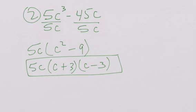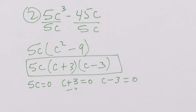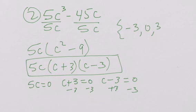If I'm going to solve, I'm going to have 5C equal to 0, C plus 3 equal to 0, and C minus 3 equal to 0. Zero pair out the 3s. So my roots are going to be negative 3, 0, and positive 3.